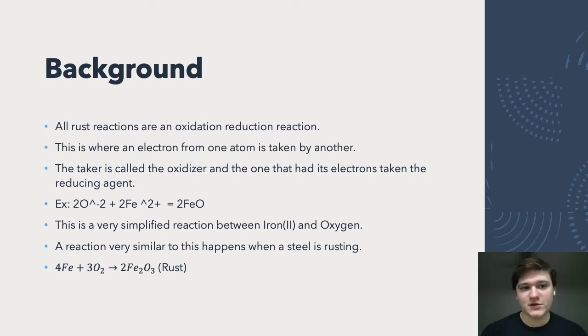All rust reactions are an oxidation-reduction reaction, defined as a reaction in which, for example, say this is an oxygen molecule and this is an iron molecule. Oxygen is very small with high electronegativity, which means it has a tendency to hold on to its electrons and even pull electrons away from other molecules. When iron and oxygen come in contact, the oxygen wanting to fill its outer valence shell is going to snap two electrons away from the iron, because it's more stable that way.